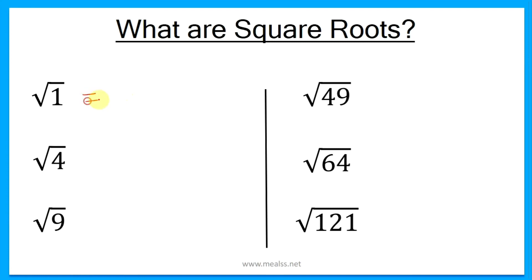The square root of 1 equals 1, because 1 squared is still 1. Square root of 4 should equal 2, because 2 squared equals 4. Square root of 9 equals 3, because 3 squared equals 9. Square root of 49 is 7. Square root of 64 is 8, and the square root of 121 is 11.